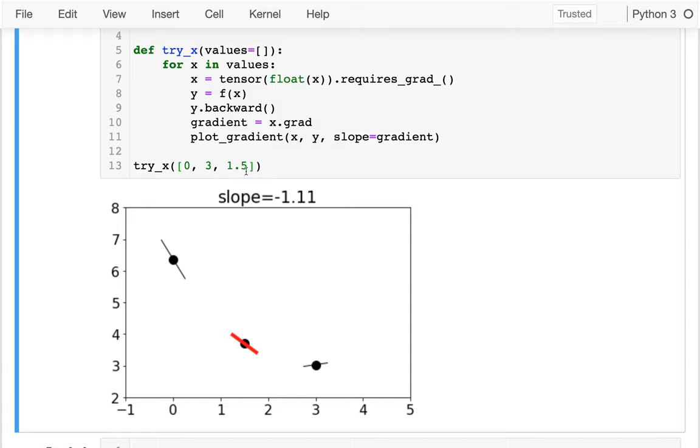You can see that when the line is really steep, I want to jump a lot. And then when it's like pretty flat, I know I'm getting close. So I want to move a smaller amount and that actually looks like it's probably a minimum. I can see that it's very flat there. And so that might be the minimum for this function.